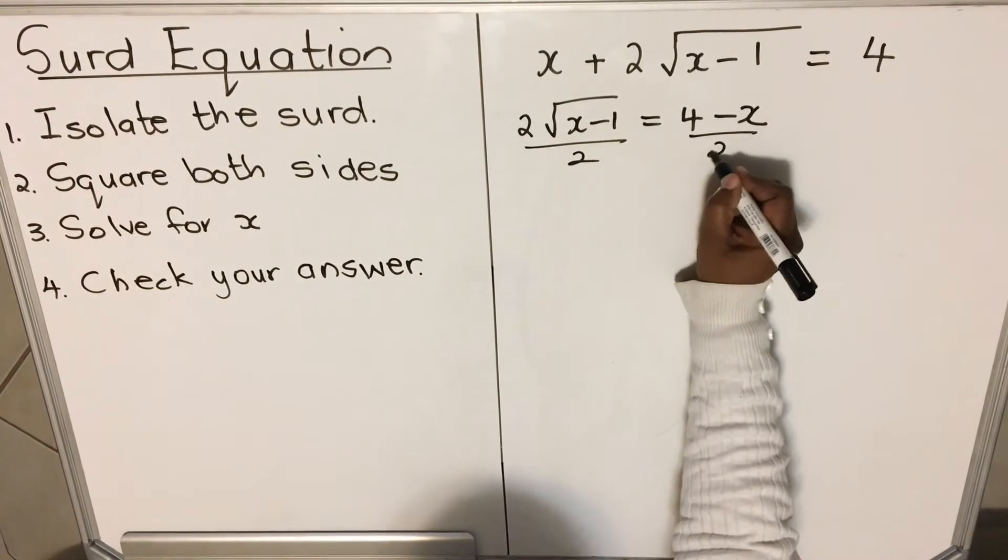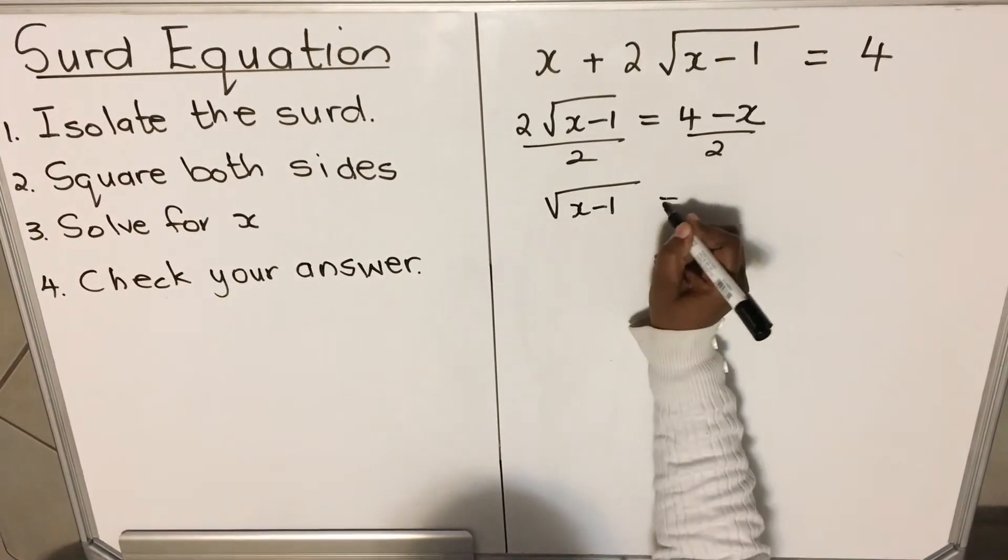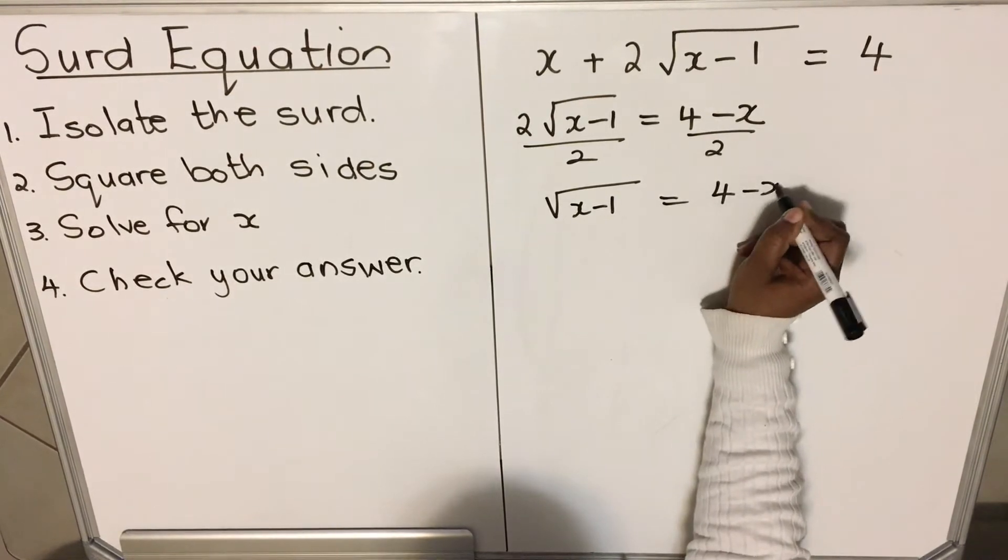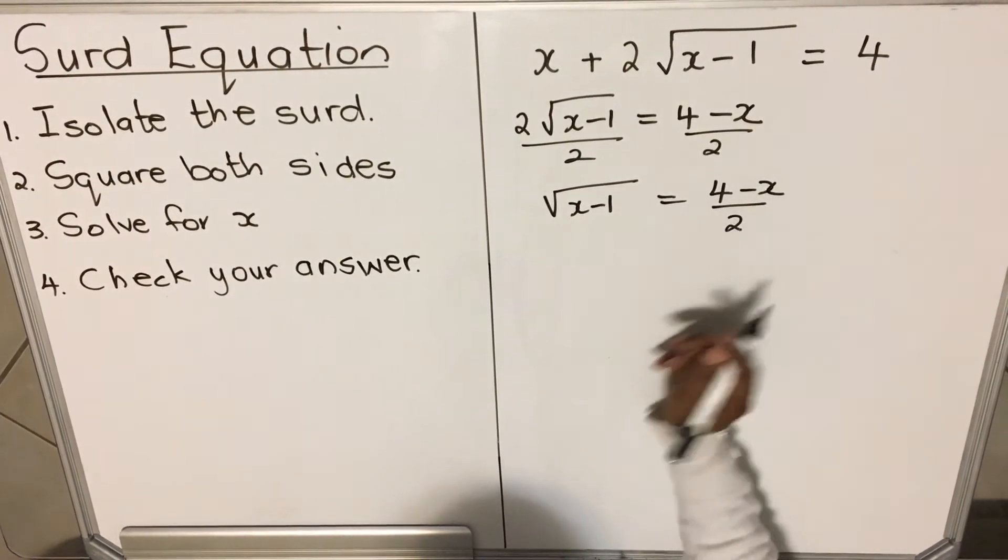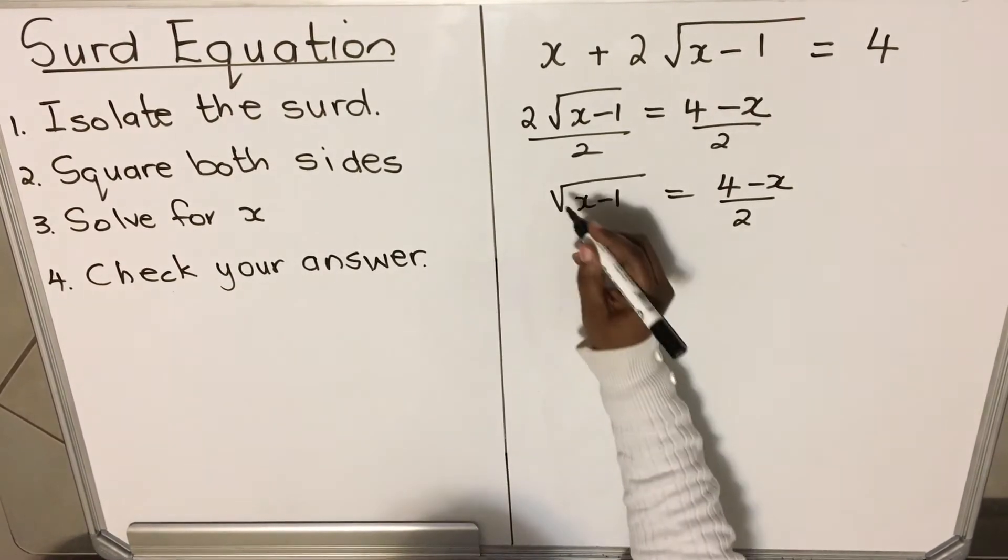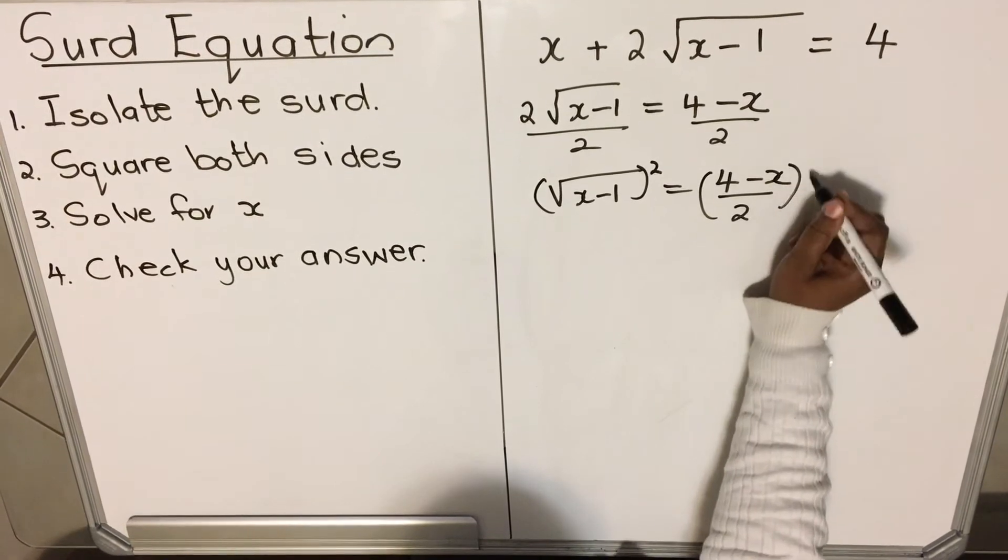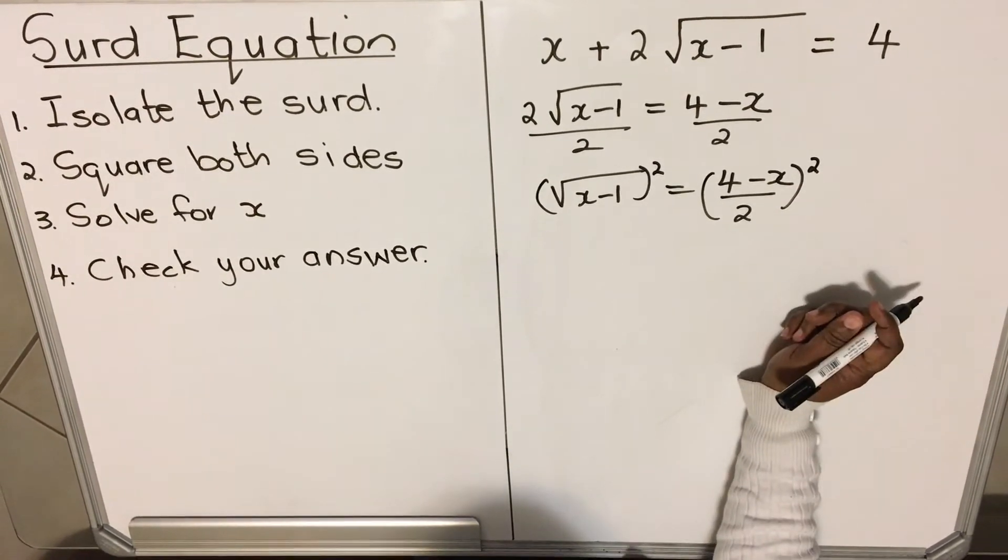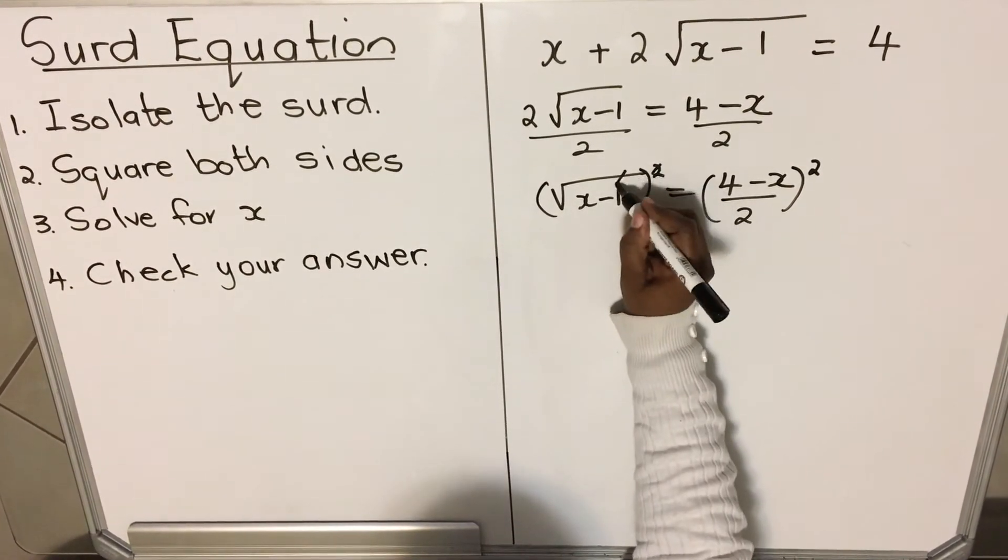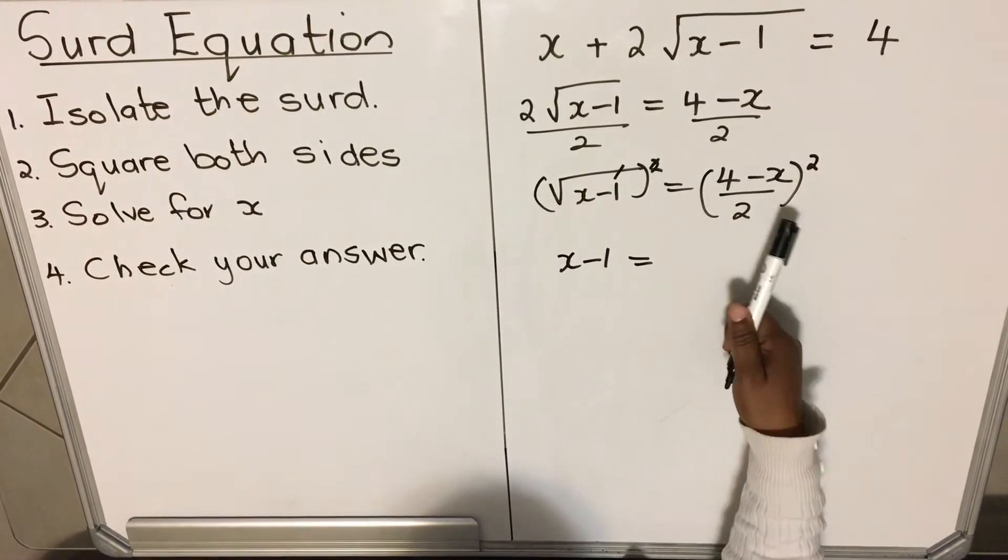Then we'll get √(x-1) = (4-x)/2. The second step: square both sides. You put a square on both sides. The square is going to cancel that square root. We'll be left with x-1 equals, then we square this side.